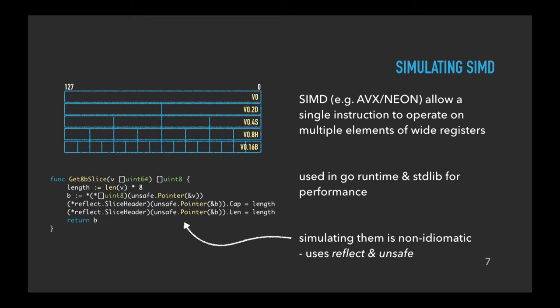It's not all a bed of roses, though, and there are some things in Go that are still a little bit tricky to carry out. One of them is simulating SIMD. SIMD allows you to take a single instruction and operate on multiple elements within a wider register, and you can see this used all over the Go runtime and the standard library for performance. However, simulating them is really ugly in Go — it's non-idiomatic, and you end up having to use the reflect and unsafe packages in order to subvert the type system. There might be a better way of doing this; I'm hoping someone can point it out, but this is what I've ended up with.